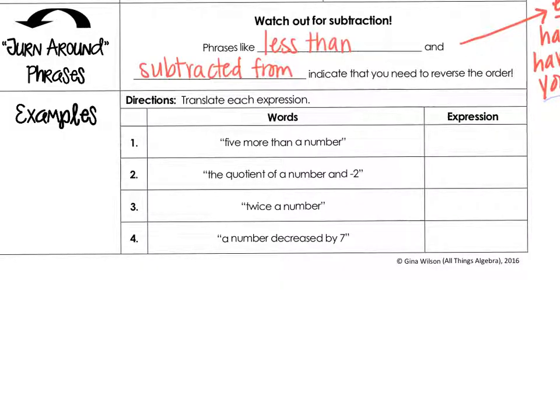Now we're going to go through the examples, and we're going to highlight the key phrases. 5 more than a number would be 5 plus x. The quotient of a number and negative 2, your key phrase is quotient, and that would be x divided by negative 2.